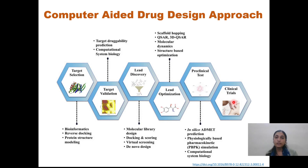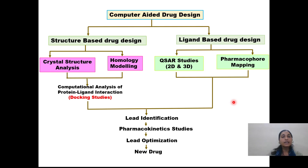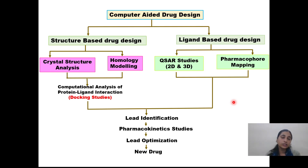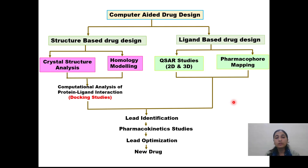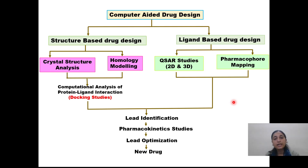Now we will see how to computationally design the drug. There are two methods: structure-based methods and ligand-based methods. In structure-based methods, we design the drug based on the three-dimensional structure of the biological target. If the crystal structure is available, we access it from UniProt or NCBI, minimize its energy, and use it as such. If the crystal structure is not available, we go for homology modeling, where we build the model based on homologous structures of the protein. Once we make and validate the model, we minimize its energy and find lead molecules using docking — a computational method by which we check the interactions of a ligand against the 3D structure of the protein. The compound showing the lowest binding energy is selected as the lead compound.